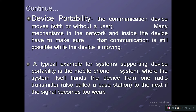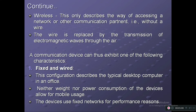Over the years we have worked on the call dropping problem. By handing over calls from one base station to another depending on signal strength, call drops have been largely avoided. Wireless communication describes a way of accessing a network or communication partners without a wire — the wire is replaced by the transmission of electromagnetic waves through the air.